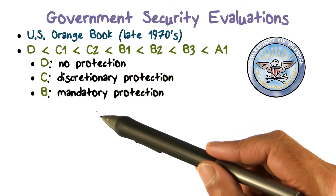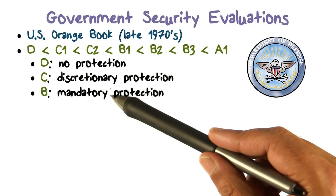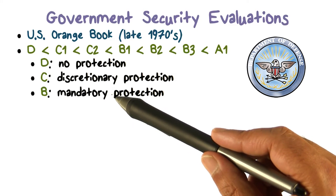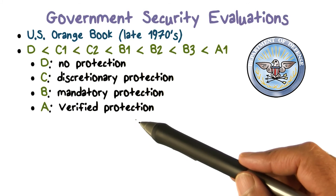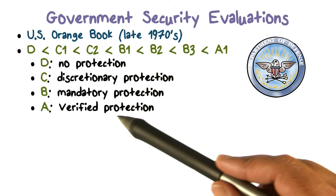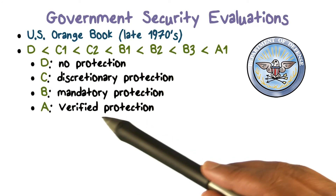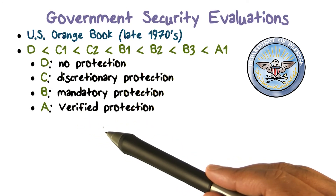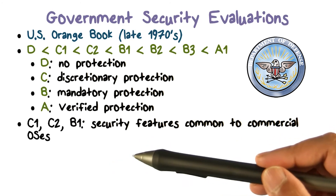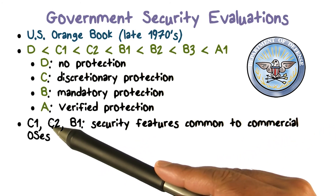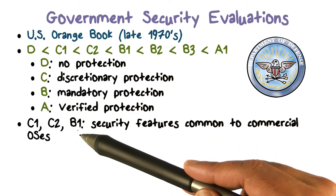If you implemented mandatory access control — for example, a BLP-like model — that moves you up to Division B. And if you used formal verification techniques, specification verification, that is what is needed to get into Division A. Most commercial systems that are widely deployed are basically in the C division.